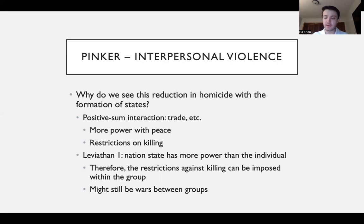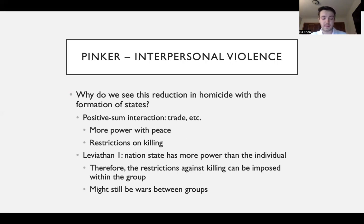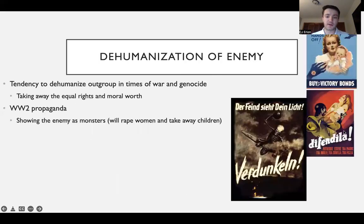With this power, there is more enforcement and restrictions against killing that can be imposed within the group. That's one possible explanation for why the formation of states can decrease violence within them. However, there might still be wars, and this may not explain decreases in war and genocide between groups. We can also look at violence and aggression from an intergroup perspective. What we see time and again with intergroup violence is a tendency to dehumanize the outgroup in times of war and genocide.